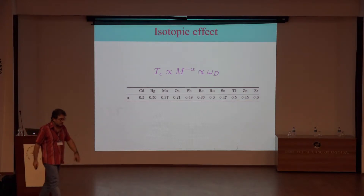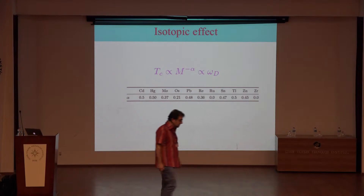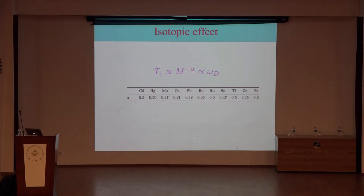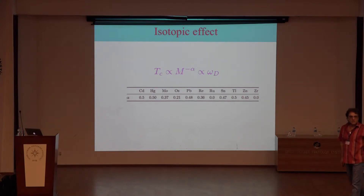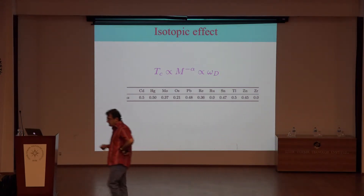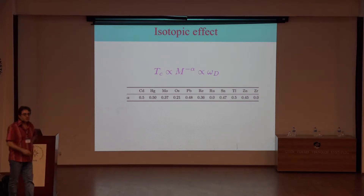A very important property for superconductivity is the isotope effect: the critical temperature is proportional to the ion mass to the power of minus alpha, which is proportional to the Debye frequency. For many elements, alpha equals 0.5. This property tells us that phonons play an important role in superconductivity.